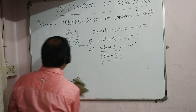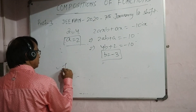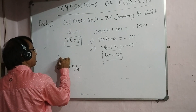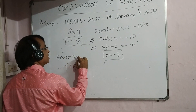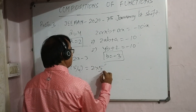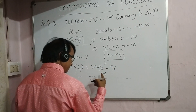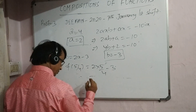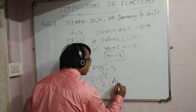Now finding f(5/4): since f(x) = ax + b = 2x − 3, we get f(5/4) = 2 × (5/4) − 3 = 5/2 − 3 = −1/2. The answer is −1/2.